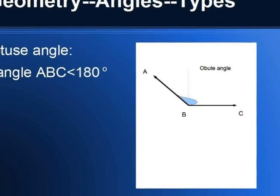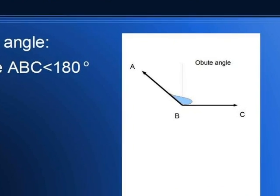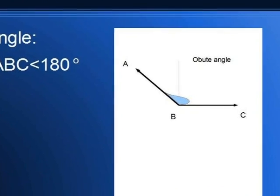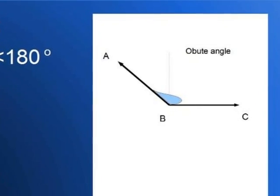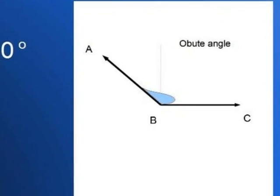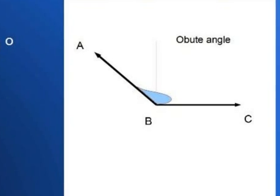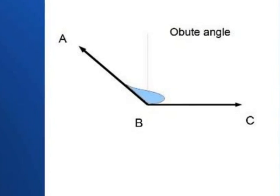Now let us move to the obtuse angle. An obtuse angle is an angle that is greater than 90 degrees but less than 180 degrees. As we can see in the diagram, we have lines A, B, and C making an angle which is more than 90 degrees but less than 180 degrees — that makes an obtuse angle.